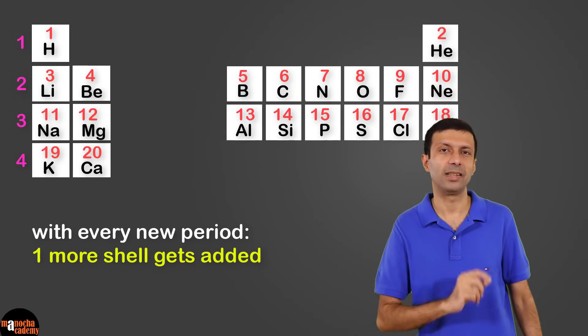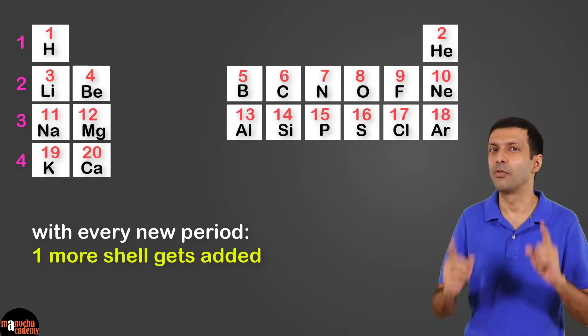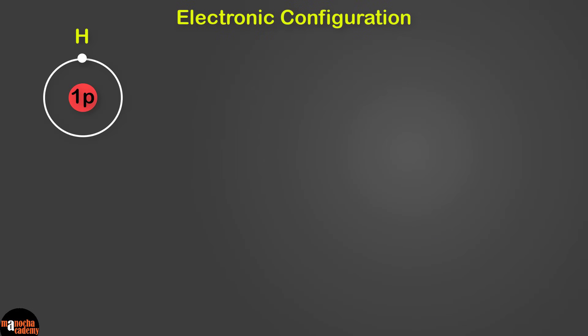Now let's verify this by looking at the electronic configuration of a few elements. Let's draw the electron configuration of hydrogen. It has atomic number 1, so just one proton and one electron. And as you can see, it has only one shell.